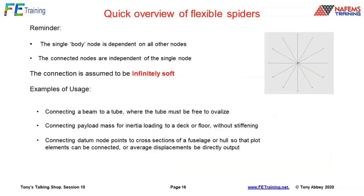For flexible spiders, as a quick reminder: the single body node is now dependent on all the other nodes — things are flipped around. The body tracks the independent nodes using a least-squares moving average, beaming the force out to the independent nodes but then tracking wherever they go — that's how we get the so-called flexibility. It's infinitely soft. Applications include connecting a beam to a tube where you want the tube to ovalize, applying payload mass with inertia loading without stiffening, and using datum points in a fuselage for plot elements.